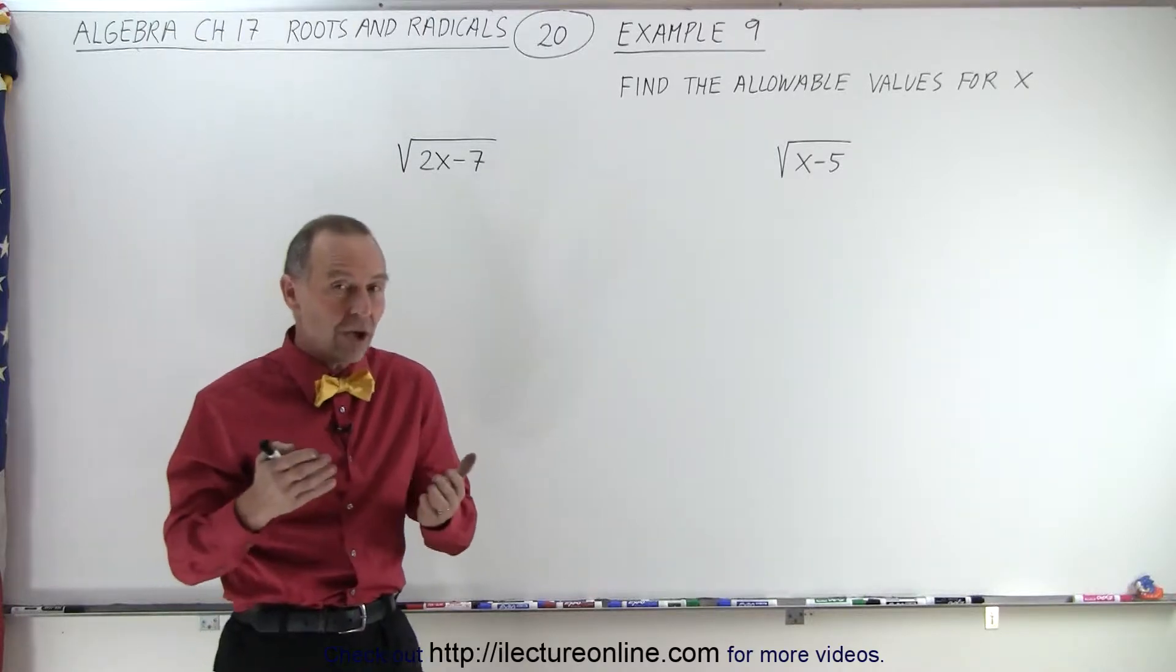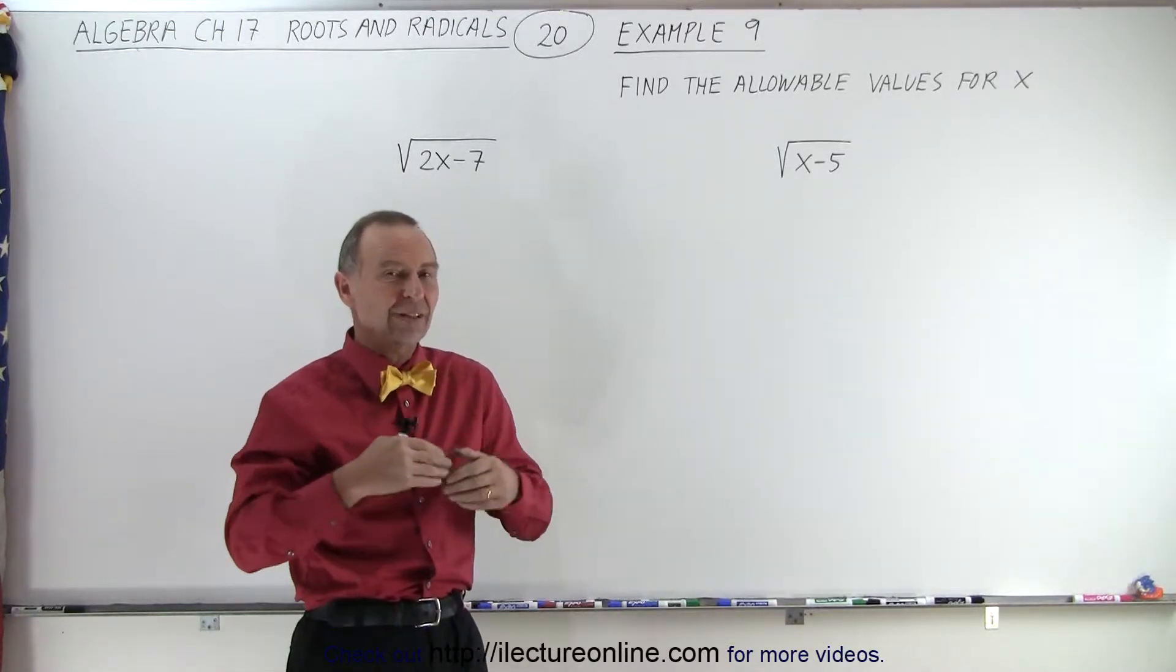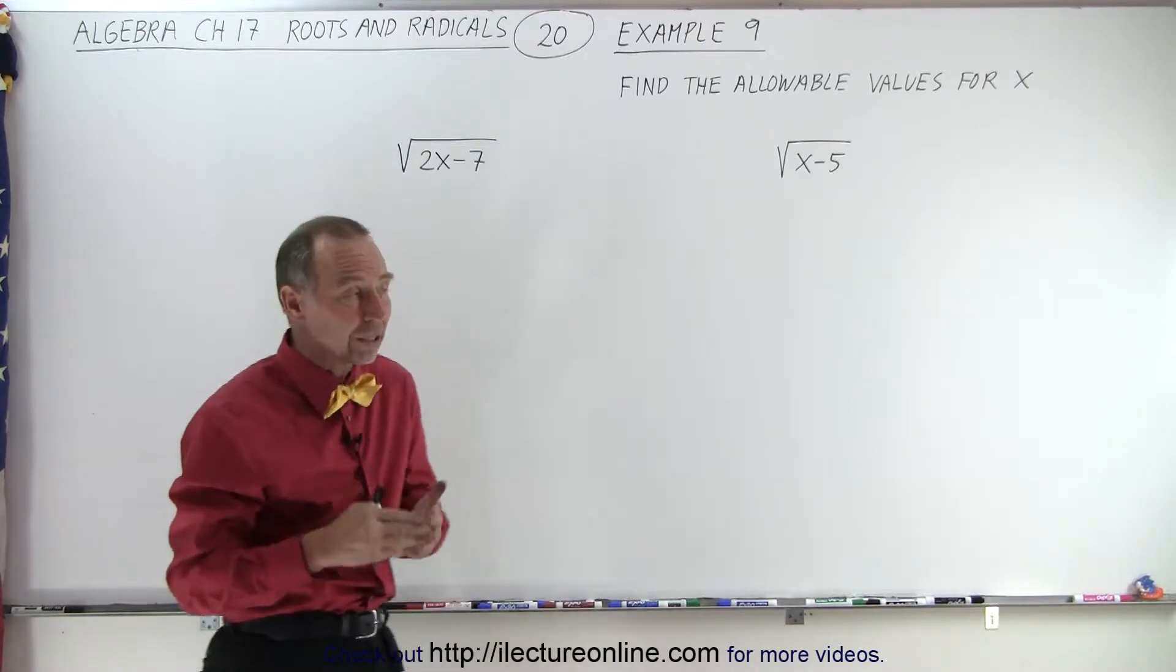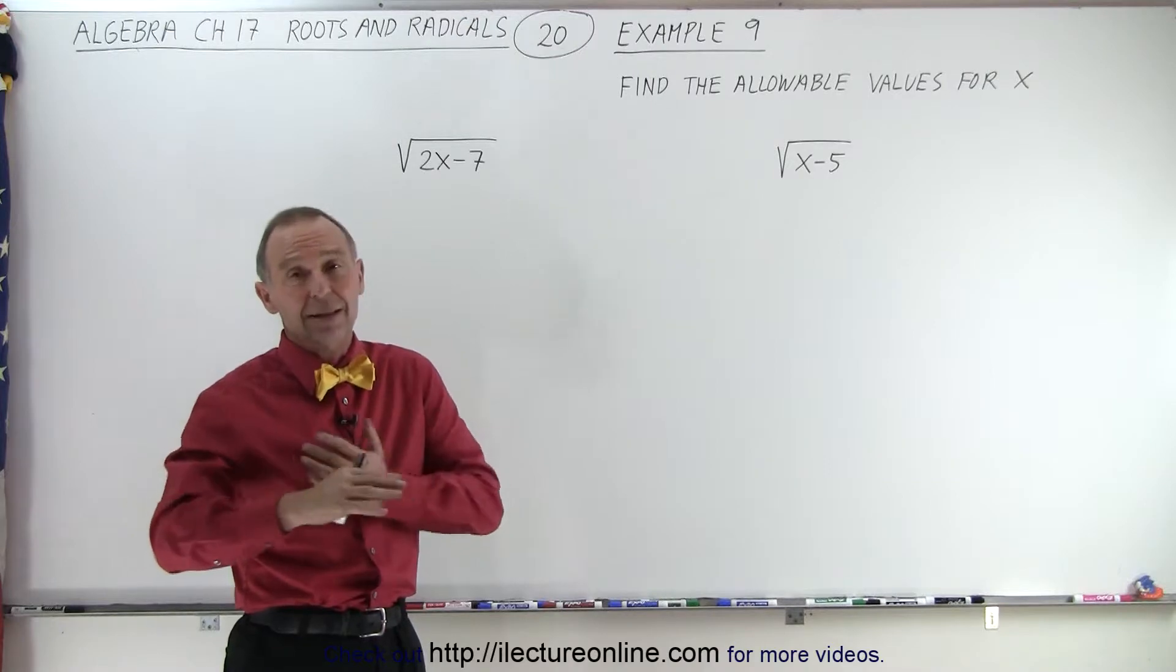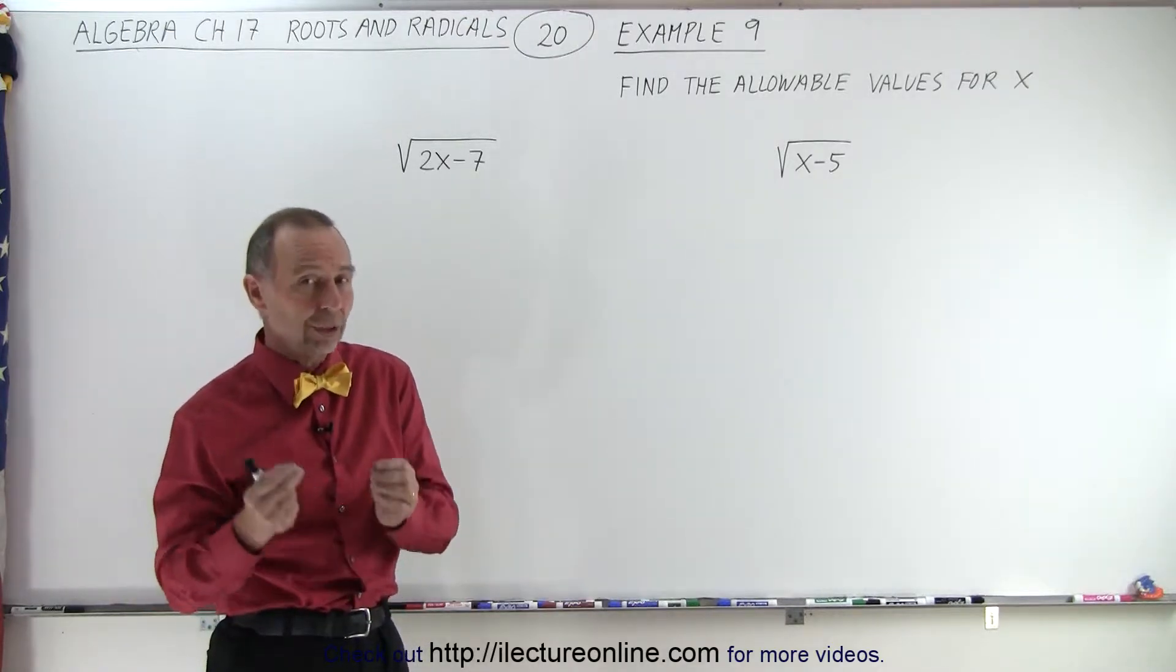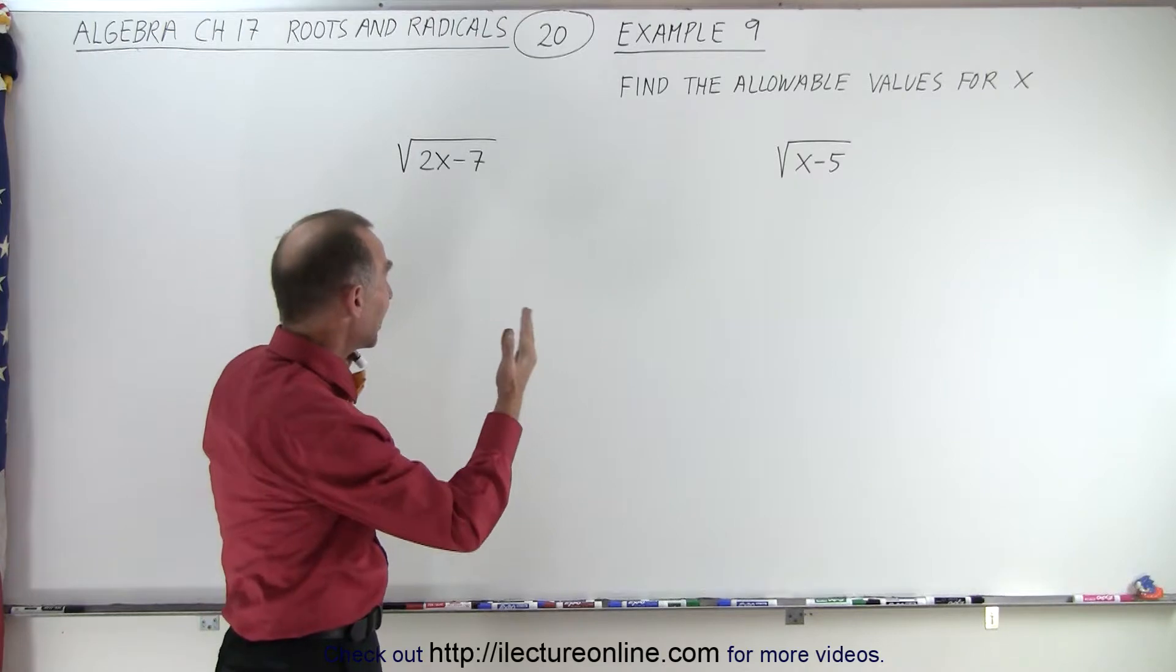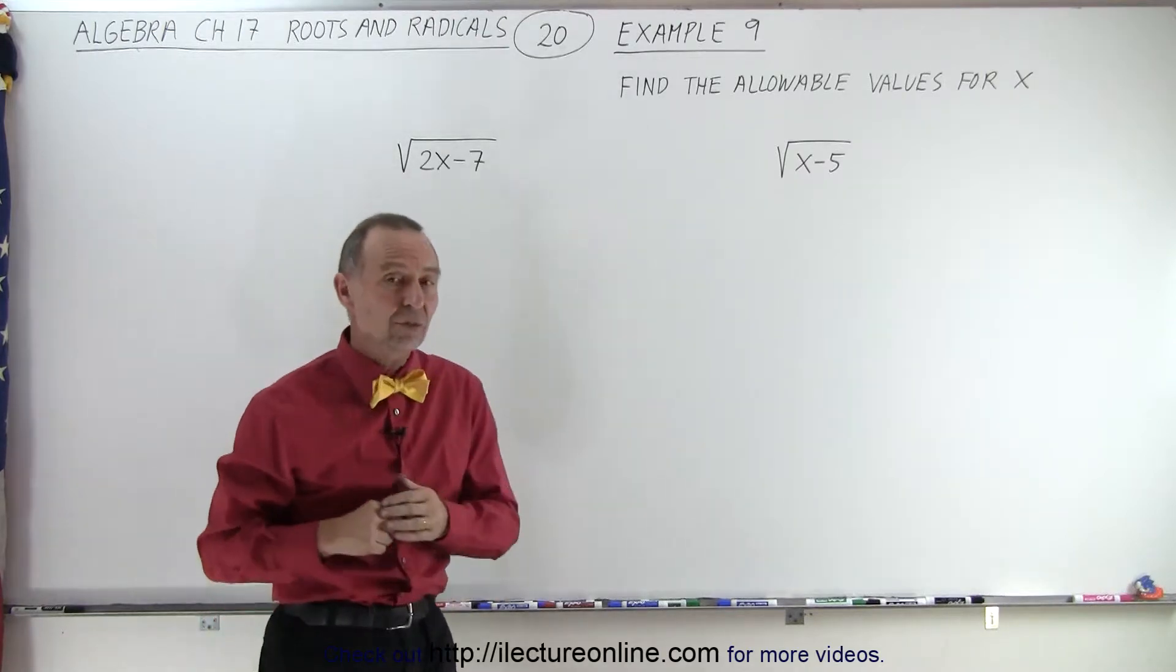We already saw that if we do have a negative value in there, we're trying to take the square root of a negative value, we come up with an imaginary number. But let's just say that imaginary numbers are not allowed. We can only have real numbers. So then we can see that if we have these type of radical expressions,